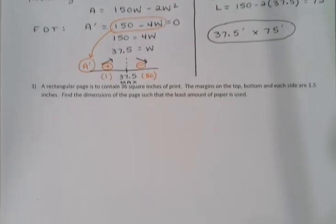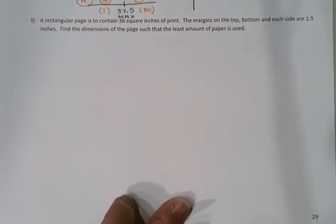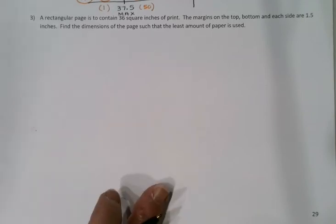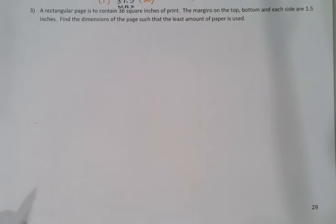So there's a couple of fence problems. Number 3 is a bit different. In this one we have a rectangular page that needs to contain 36 square inches of print. The margins on the top, bottom, and each side are 1.5 inches. Find the dimensions of the page such that the least amount of paper is used.